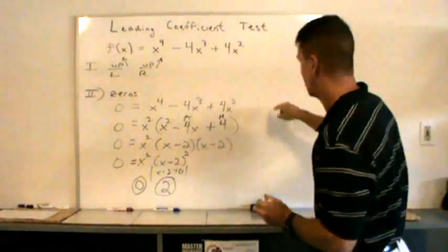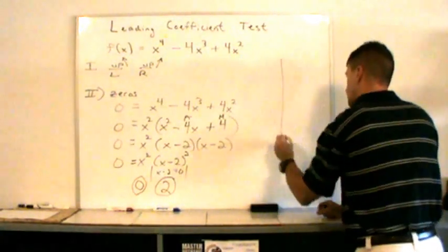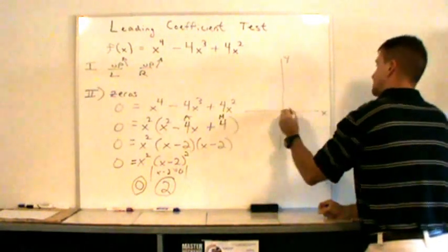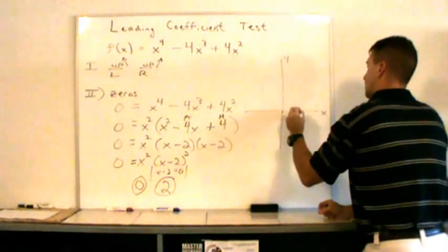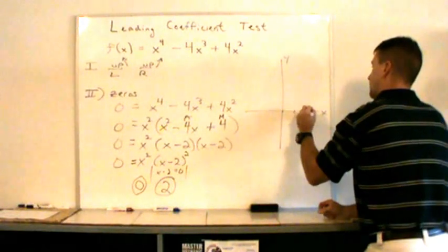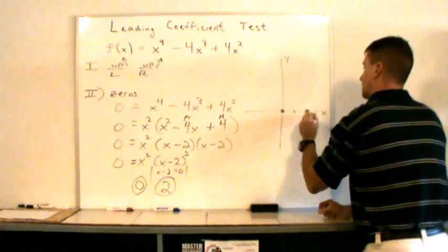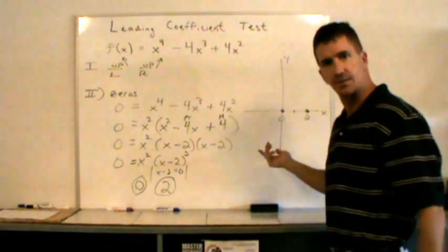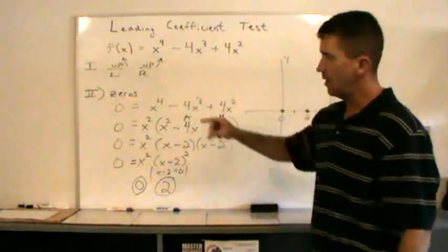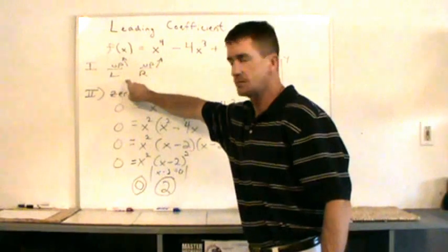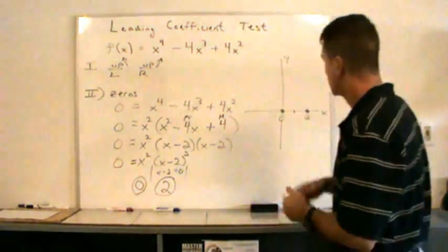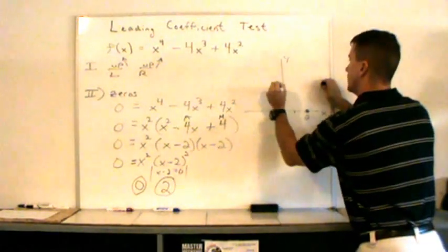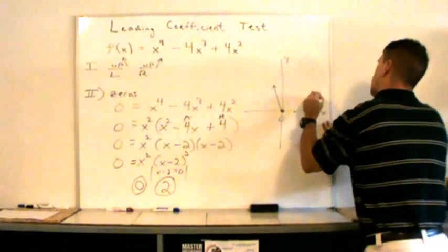I'm going to start building the graph right now. I'll draw the y-axis and x-axis, mark 0, 1, and 2, and put a dot at x = 0 and x = 2 — labeling those as x-intercepts. From step one, we know the graph is going up and outward on both ends.